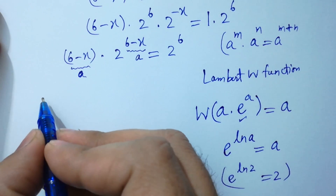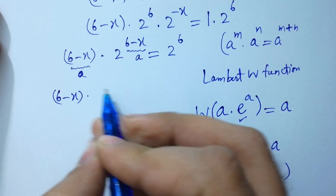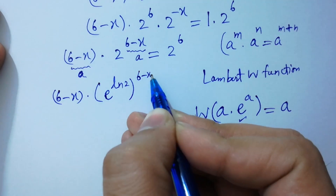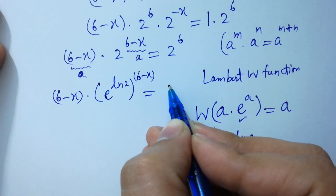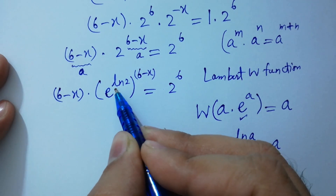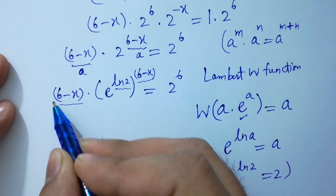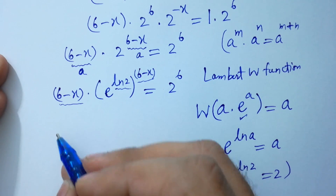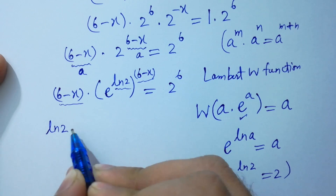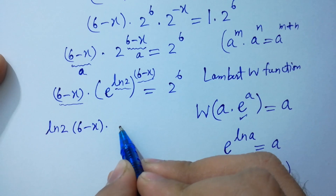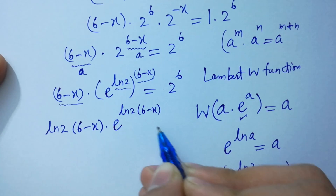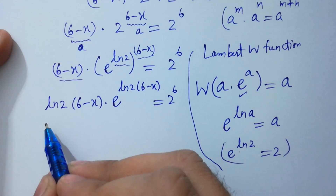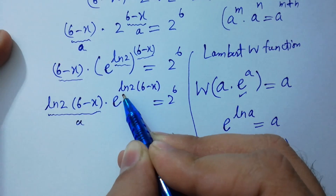So I can write: (6 minus x) times (e to the power natural log 2) to the power (6 minus x) equals 2 to the power 6. Now here we have ln 2 and (6 minus x) in the exponent, and (6 minus x) as the base factor. We need natural log 2 throughout, so multiply by natural log 2 on both sides: natural log 2 times (6 minus x) times e to the power (ln 2 times (6 minus x)) equals 2 to the power 6 times natural log 2.